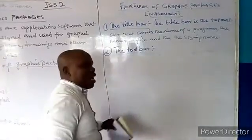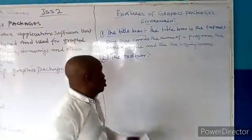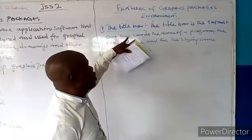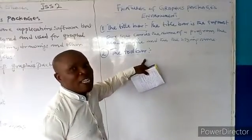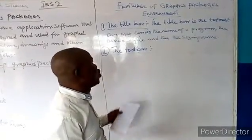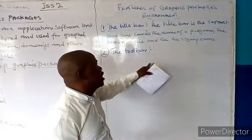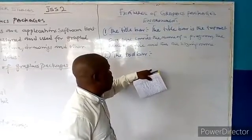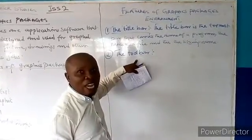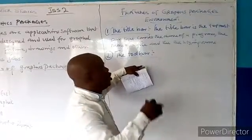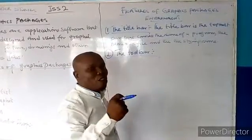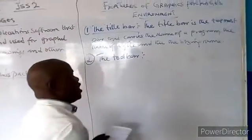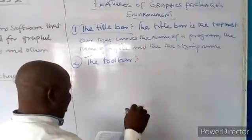Number two is the toolbar. Just like a mechanic has tools, the graphic package environment has a toolbar. It is a rectangular area that contains all the tools needed to perform certain jobs or work on the application. The user picks the tool they need from here and begins using it to do the work or project.